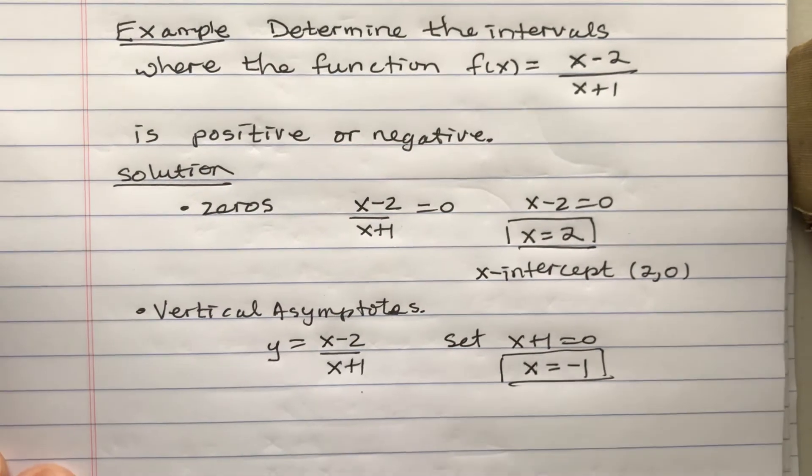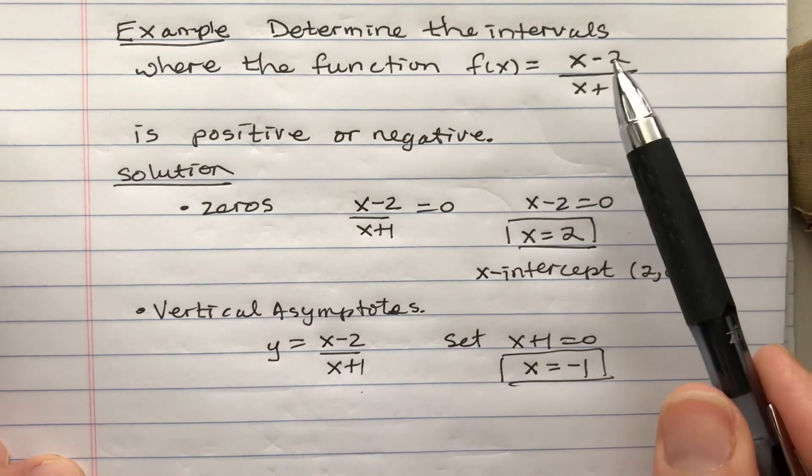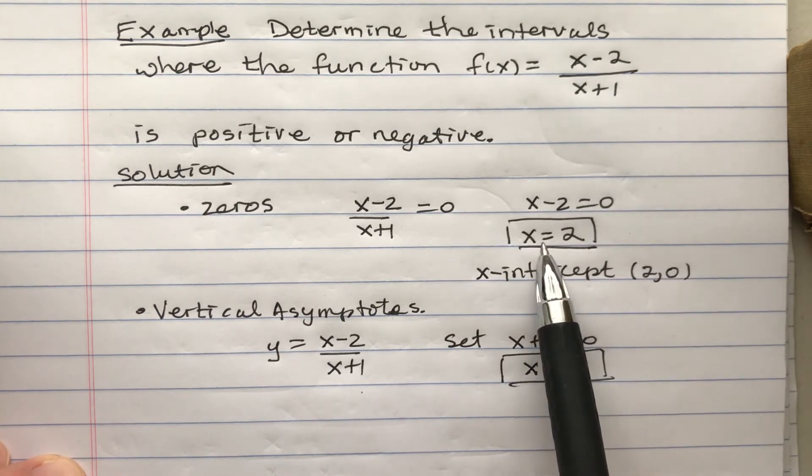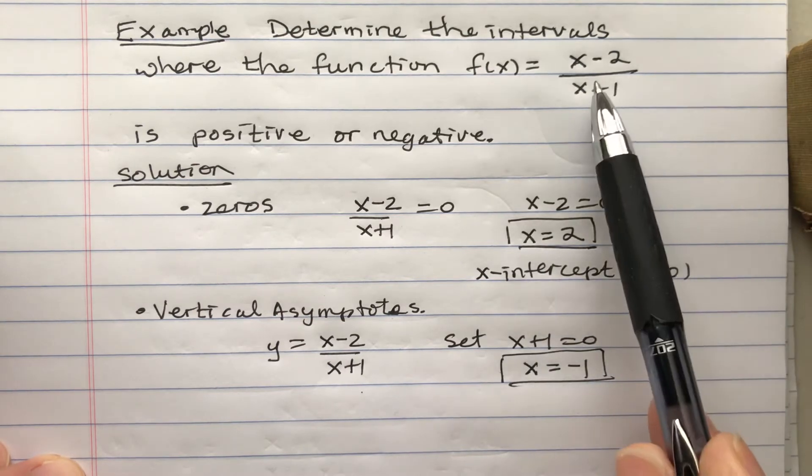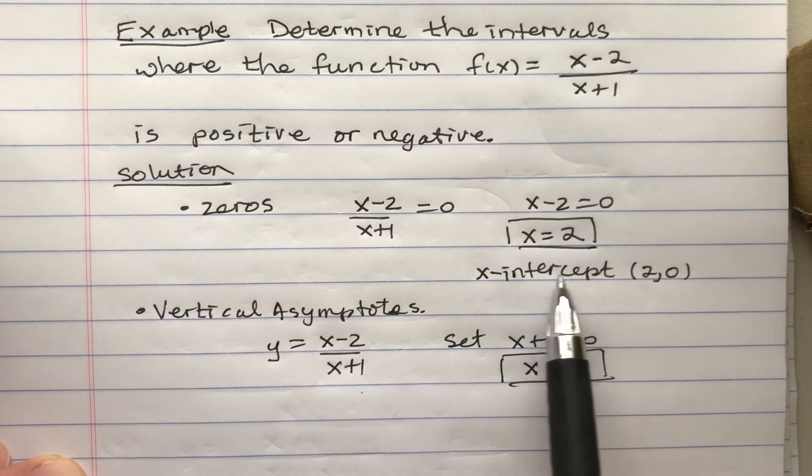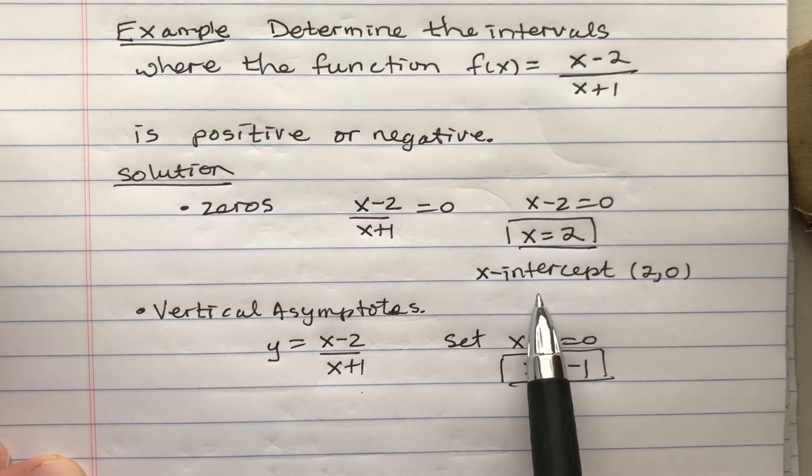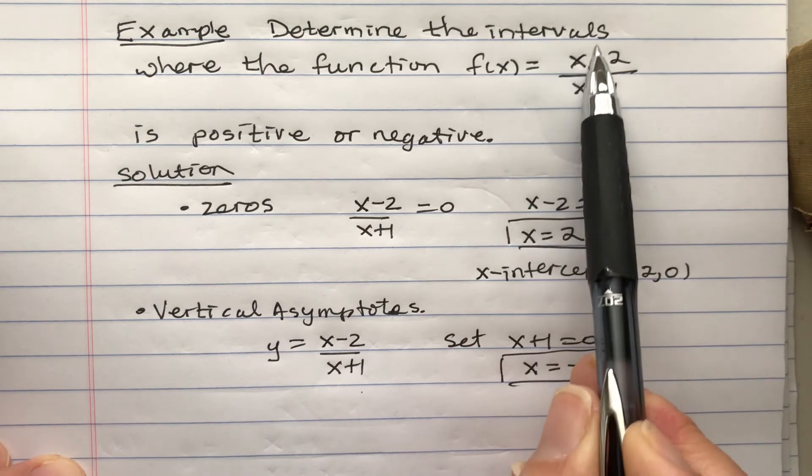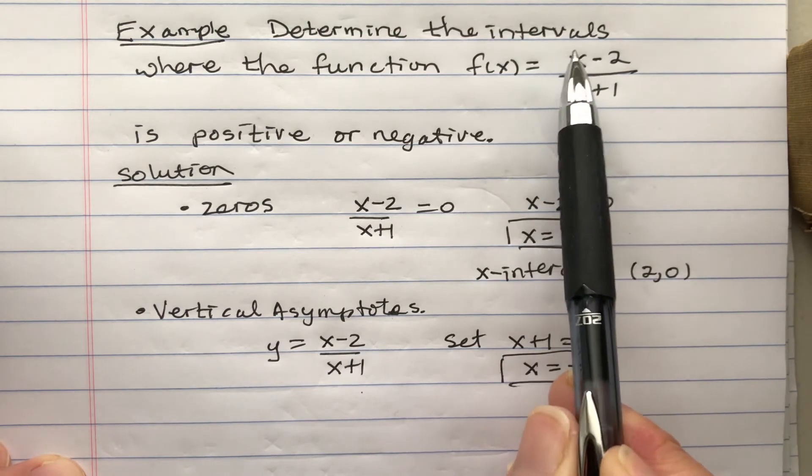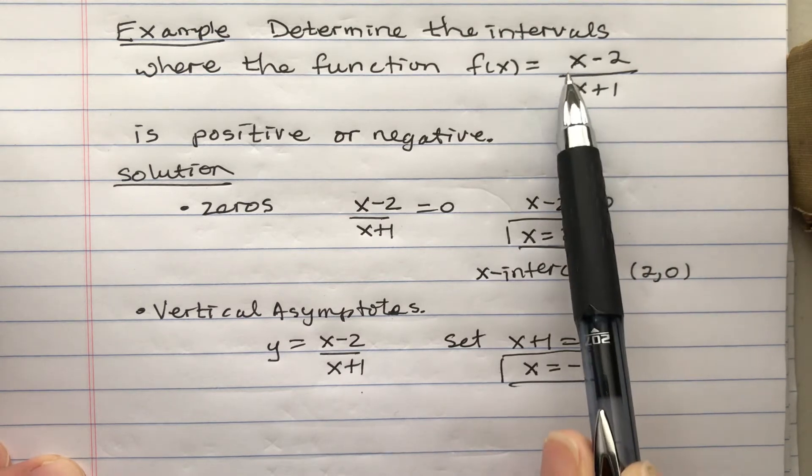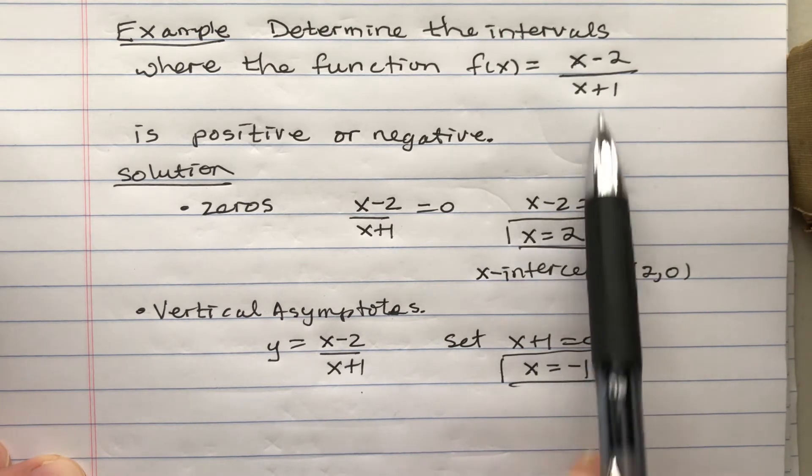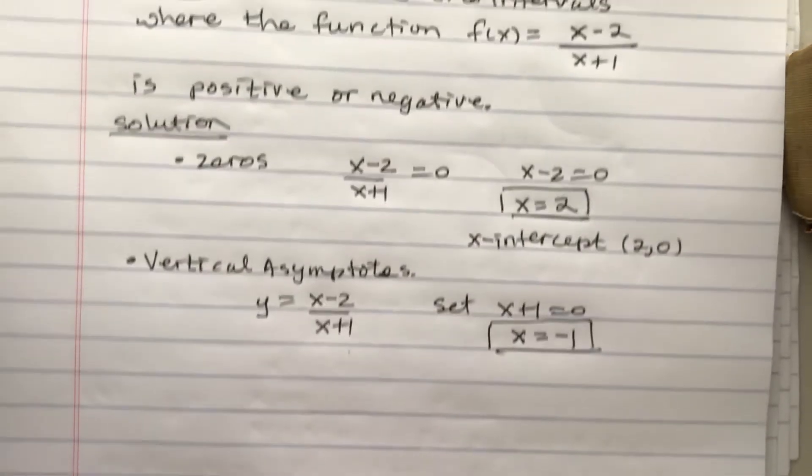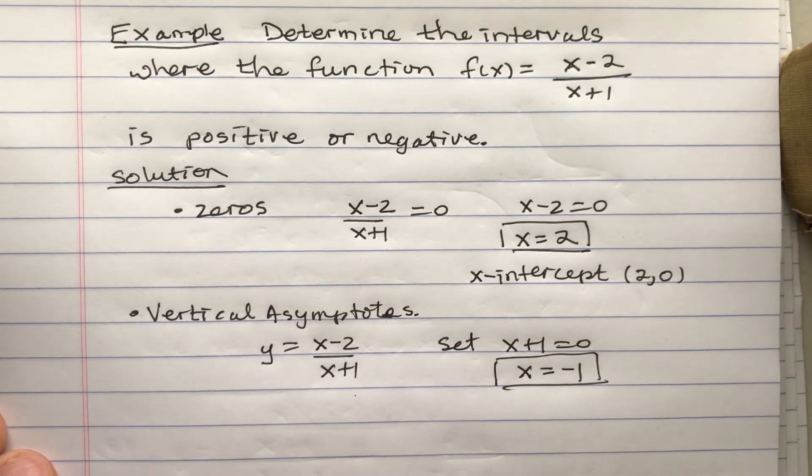Now, what happens for a function like this is that it's only going to change from positive to negative in two cases. It changes from positive to negative when it passes through the x-axis at an x-intercept. Suppose this is positive. As x changes, for y to go from positive to negative, it has to equal zero. So as we cross over zeros, it could change from positive to negative. But another place it could change is at vertical asymptotes. Let's go ahead and do this problem.